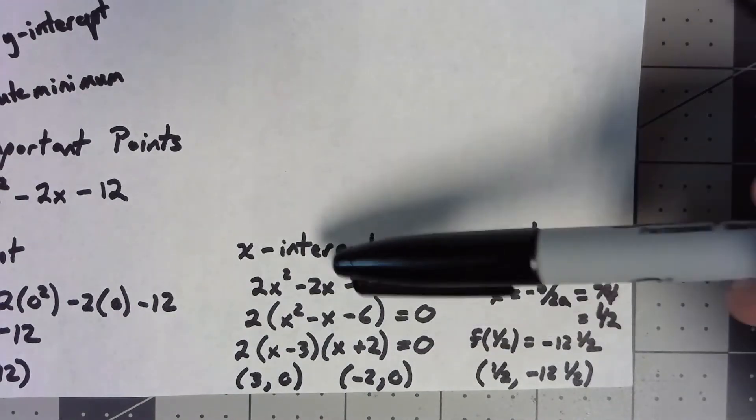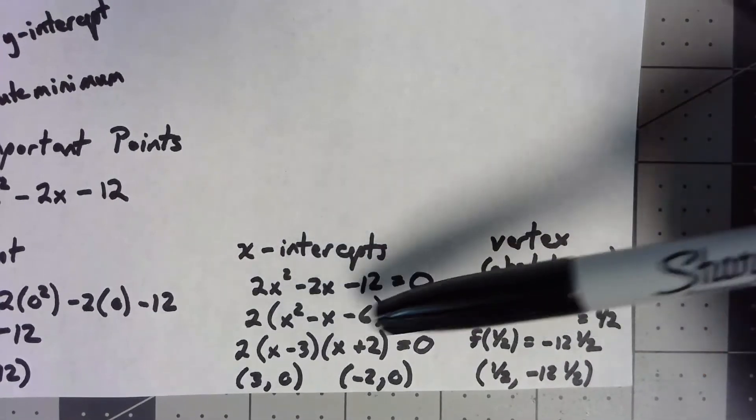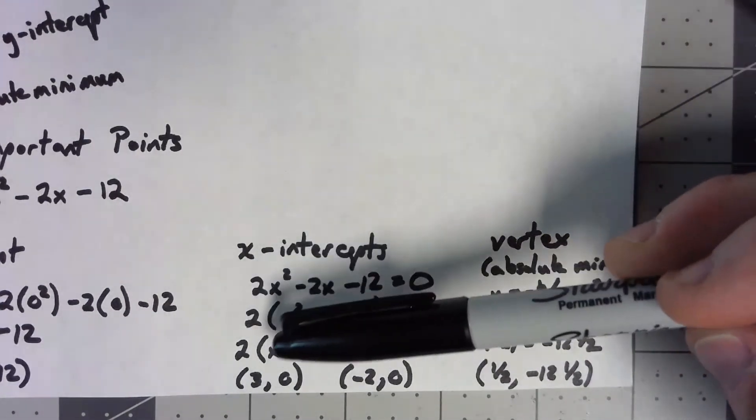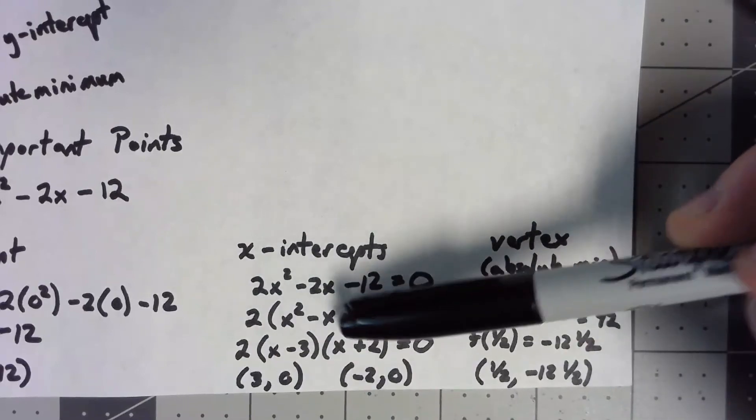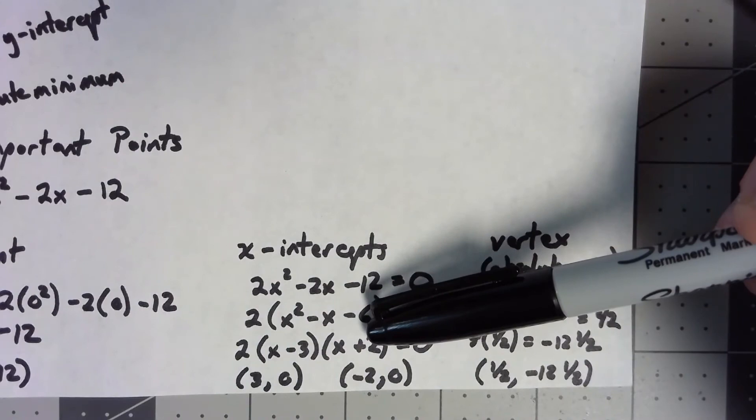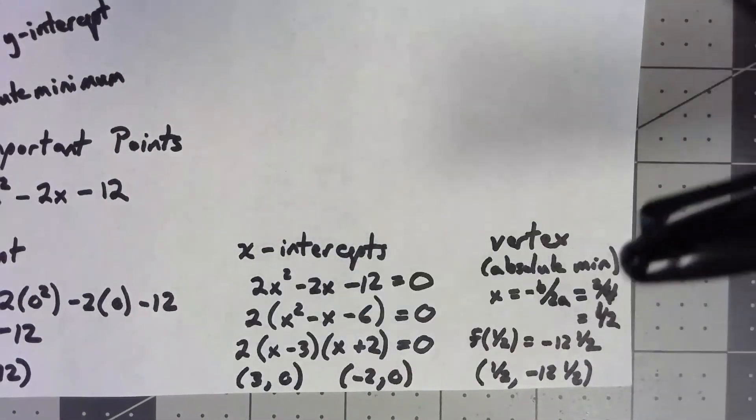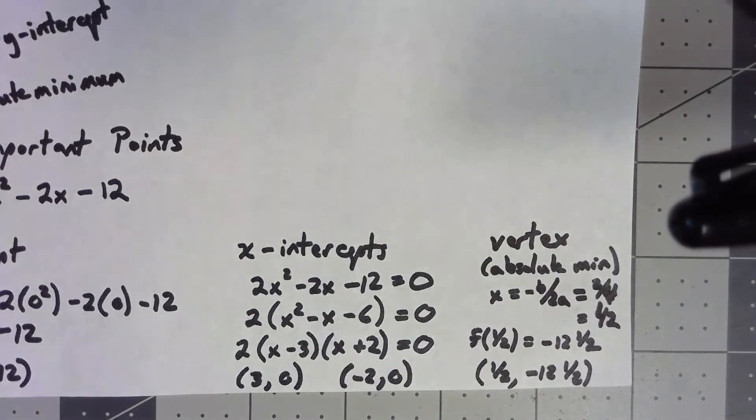And now, we know that if I've got things multiplied together, the thing that makes it zero is when any of the individual factors is zero. Three makes that zero. Negative two makes that zero. So, three zero and negative two zero are my x-intercepts.